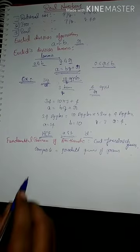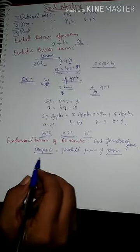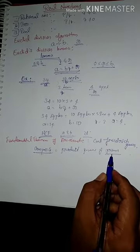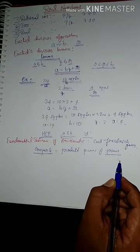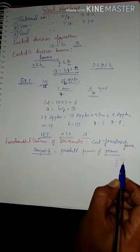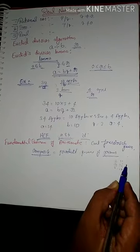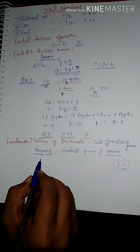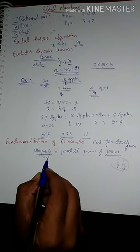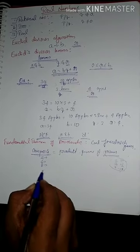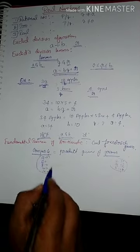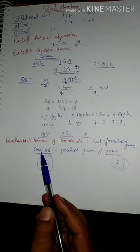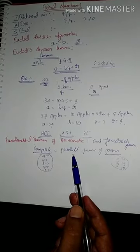We already know the difference between composite numbers and prime numbers. A number having exactly two factors is called a prime number — for example, 2, 3, 5, 11, 13, and 17. A number having more than two factors is called a composite number — for example, 4, 6, 8, 10, and 12. The Fundamental Theorem of Arithmetic states that every composite number can be expressed as the product of powers of prime numbers.